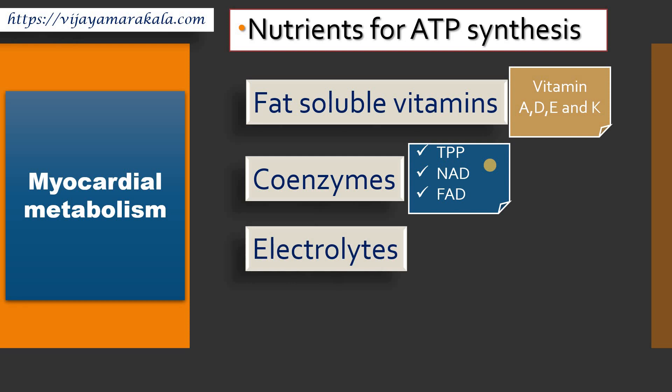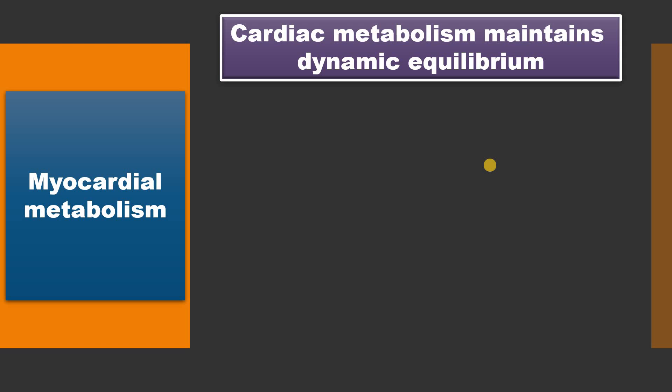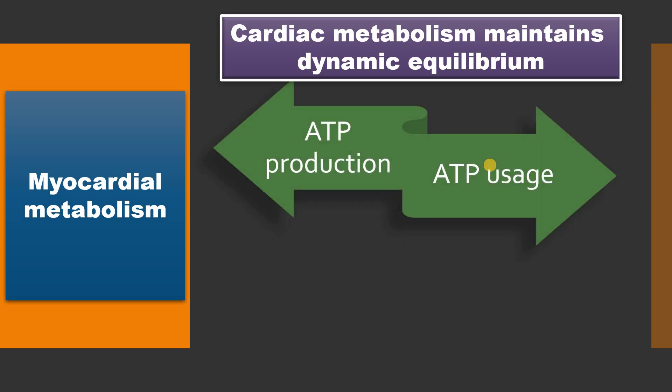We also require electrolytes for normal myocardial metabolism, like calcium, sodium, potassium, chloride, and various other minerals. For the normal myocardial metabolism and synthesis of various proteins in the myocardium, we require essential amino acids. The heart or cardiac metabolism maintains a dynamic equilibrium between ATP production and utilization of ATP.